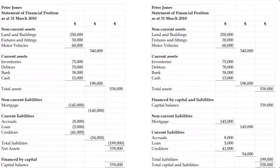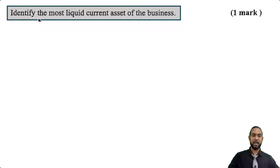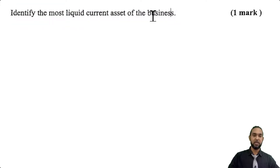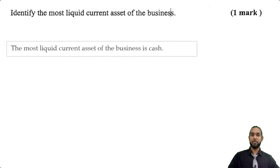Part A two is a simple one-mark item: identify the most liquid current asset of the business. The liquidity of an asset is how easy it is to convert to cash, or how near it is to cash. Therefore, the most liquid current asset of this business is cash, because cash is already in liquid form.